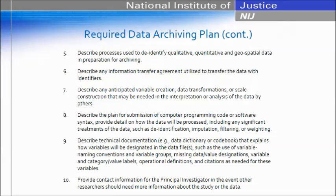If the proposed research includes information identifiable to a private person, the plan must include the assurances of confidentiality, the consent form approved by the IRB and the Human Subjects Protection Officer, a copy of the privacy certificate, and the IRB approval documentation. It also includes a description of processes used to de-identify the data, any information transfer agreements utilized, any anticipated variable creation, data transformations, scale construction, and a plan for submission of the computer programming code or software syntax used to analyze the data, the technical documentation in the way of the code book, and contact information for the principal investigator.